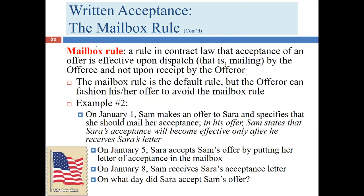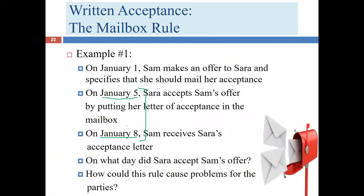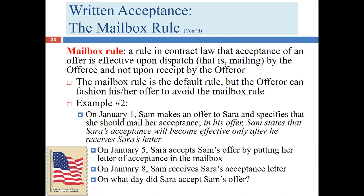The solution is called the mailbox rule. It's a rule in contract law that acceptance of an offer is effective upon dispatch — that is, upon mailing by the offeree — and not upon receipt by the offeror. So acceptance happened on January 5th, even though Sam had no idea Sarah had put that letter in the mailbox. He is in a contract on January 5th, 6th, and 7th, even though he doesn't know it. That's what the mailbox rule provides.